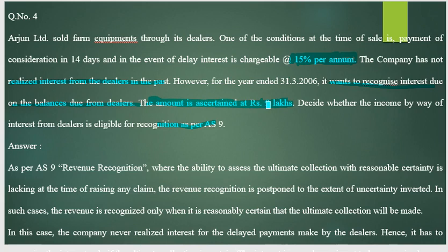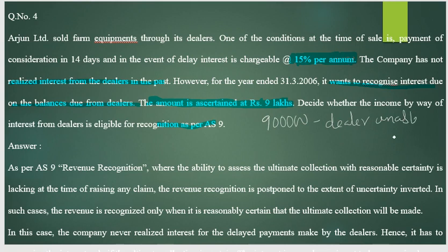The interest of 9 lakh rupees is due from dealers who were unable to sell the goods within 14 days. Arjun Limited is charging interest on the delayed payment. The question is whether this 9 lakh rupee interest should be recognized as revenue.